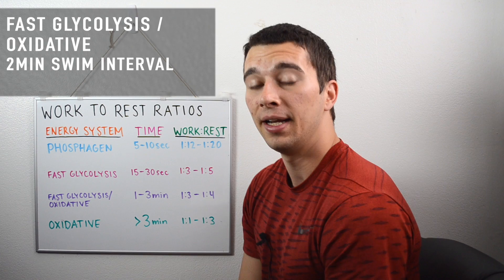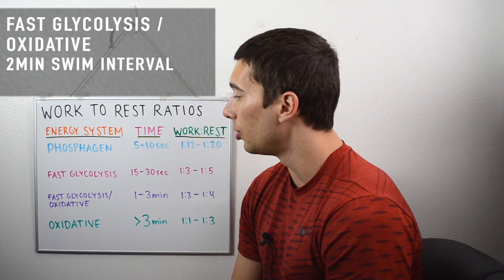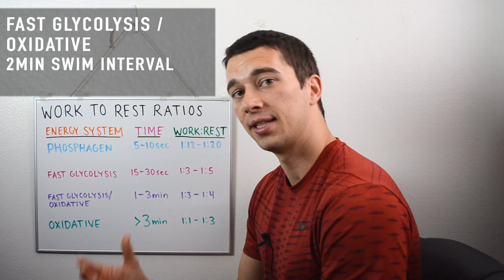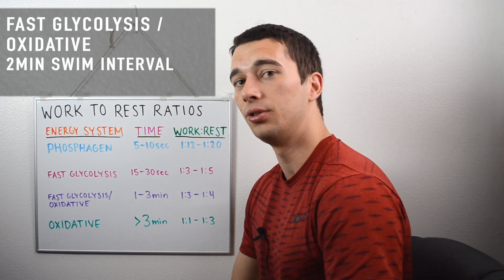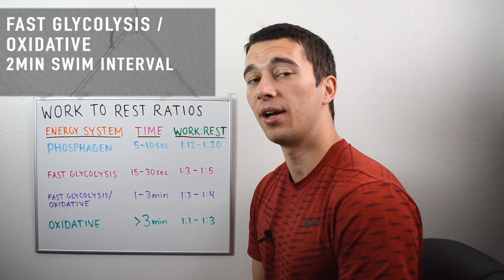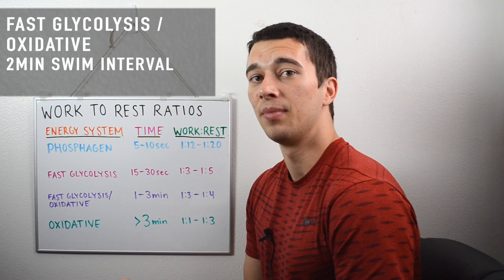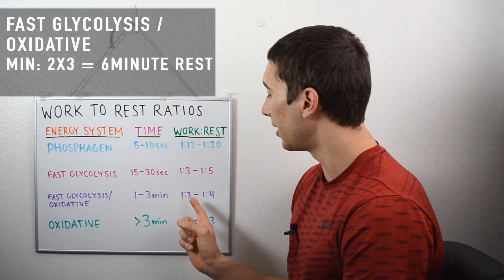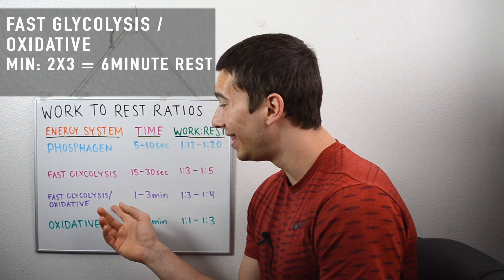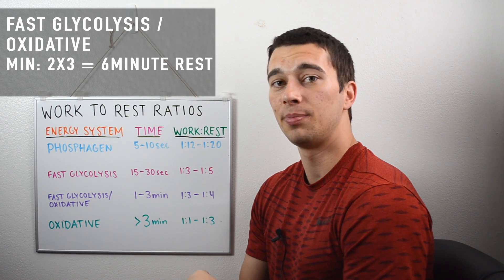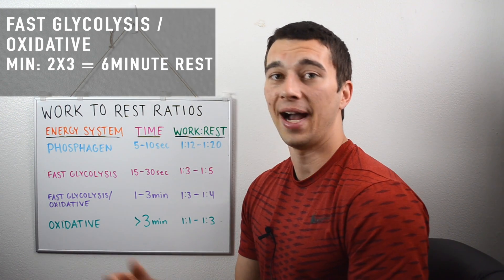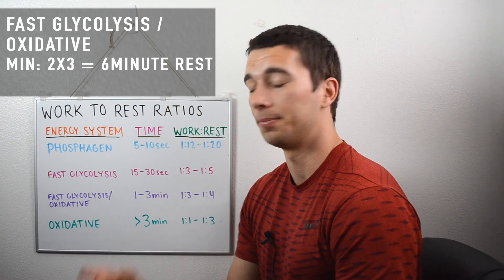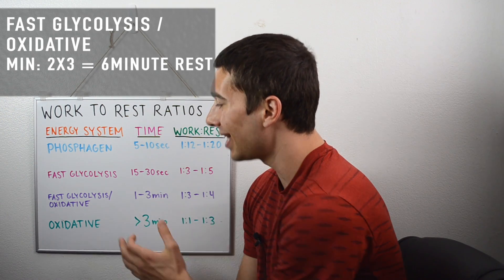For the fast glycolysis and oxidative mixed system, let's assume we're doing a two-minute swim interval — a hard effort going back and forth freestyle for two minutes. We want to give athletes enough rest to clear the system so they can go back to another hard two-minute effort, without so much rest that they lose focus. We use a 1:3 to 1:4 work-to-rest ratio here. With a two-minute hard effort multiplied by three, that's six minutes of rest. In swimming, oxidative work is often used as rest — a technique drill, backstroke, or elementary backstroke at low intensity for six minutes before the next hard two-minute effort.